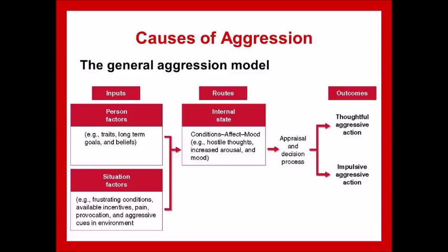Craig Anderson and Brad Bushman proposed their general aggression theory in an attempt to consolidate many of the previously proposed theories. They said that aggression occurs because of a number of personal, situational, biological, social, and psychological factors. They also threw in traits, gender, attitudes, beliefs, values, and long-term goals, all of which come to bear on situational variables like time, place, cues, provocation, drugs, and even incentives to aggress.